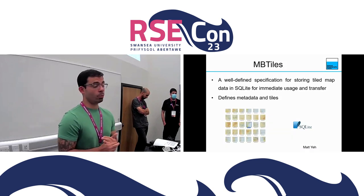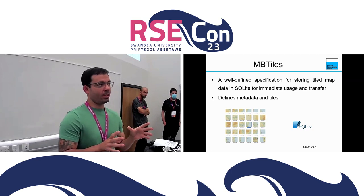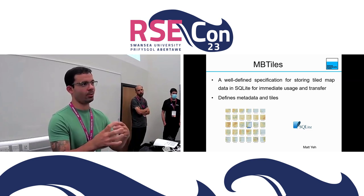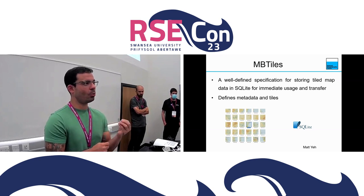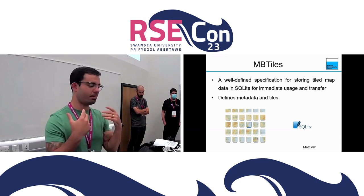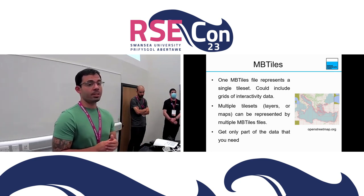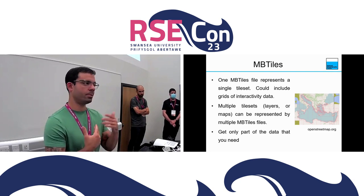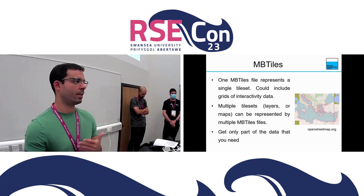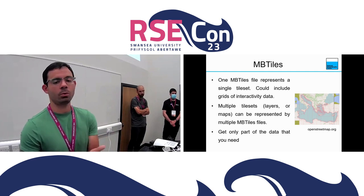In the end, we chose to work with MBTiles. The idea behind MBTiles is that you convert your shapefile or GeoJSON file to a SQLite database organized with metadata and tiles. You perform queries based on the tiles and overview to get the data you need, instead of loading the entire SQLite database or shapefile. One SQLite file can represent a single tile set, but could include grids of interactive data, and multiple tile set layers or maps can be represented by multiple MBTiles files.